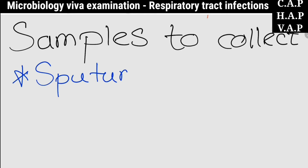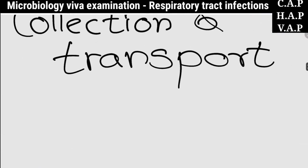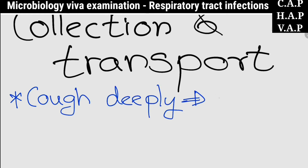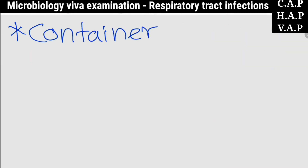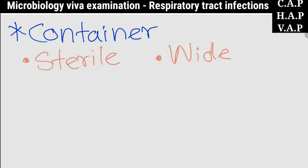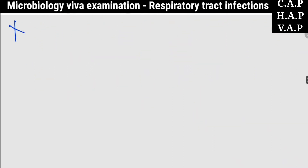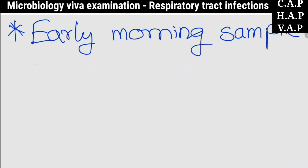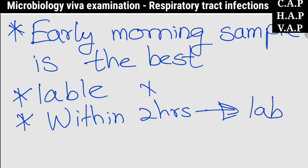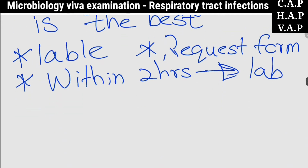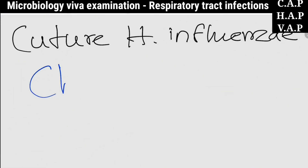The samples to collect from this patient include a sputum sample and a blood sample. To collect and transport a sputum sample from a patient suspected of Haemophilus influenzae infection: first ask the patient to cough deeply and produce sputum, not saliva, and collect it into a sterile wide-mouth screw-cap bottle. An early morning sample is preferred. The sample should be properly labeled and sent to the laboratory within two hours with a properly filled request form. It should not be refrigerated.